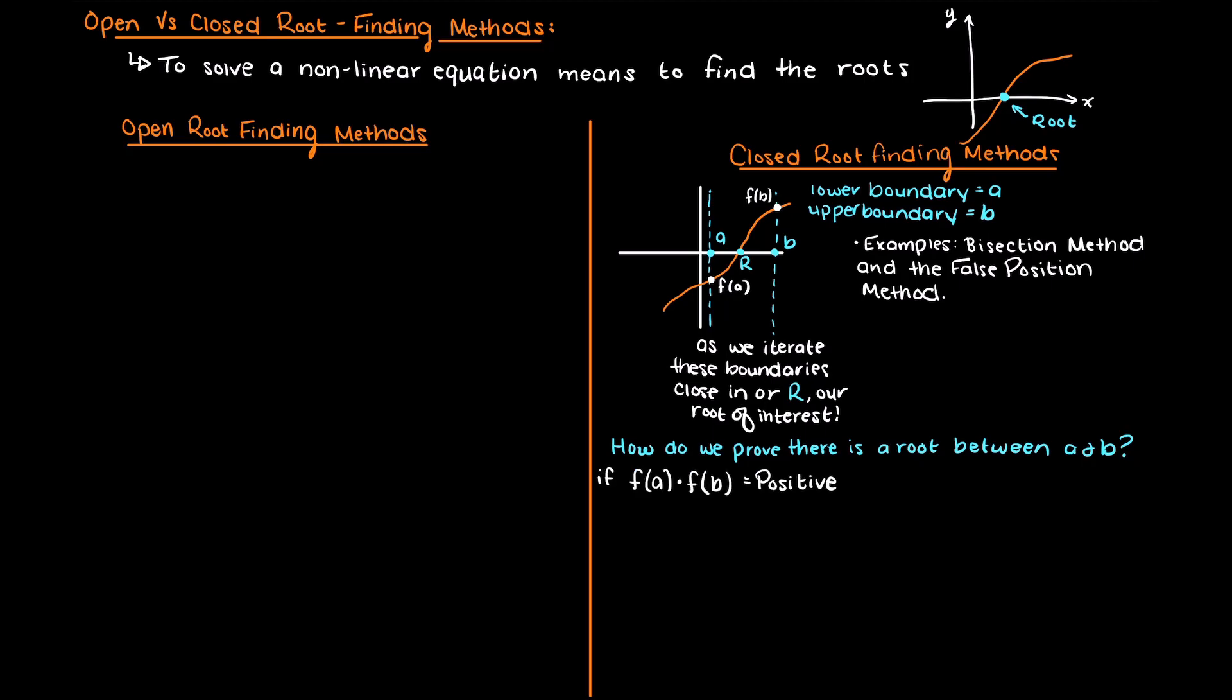If we receive two negative outputs or two positive outputs we would get a positive product, whereas if we multiply a negative and a positive output we will get a negative product. Because we get a negative product we know that we have a root within that boundary, as we must cross the x-axis.